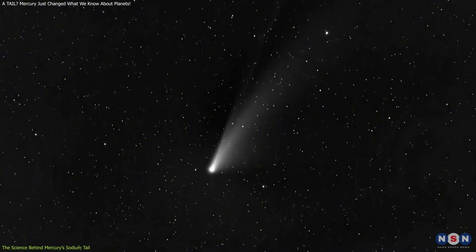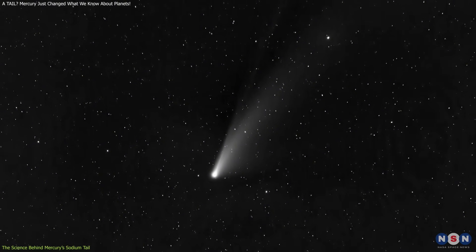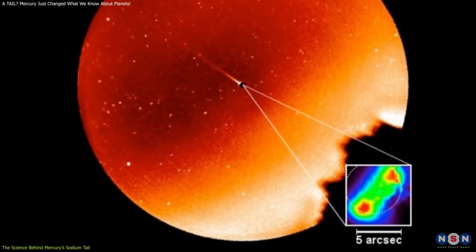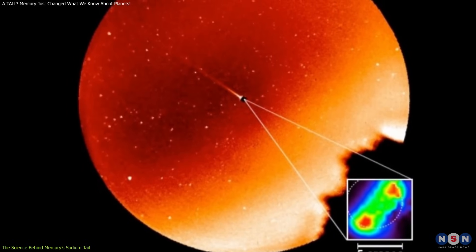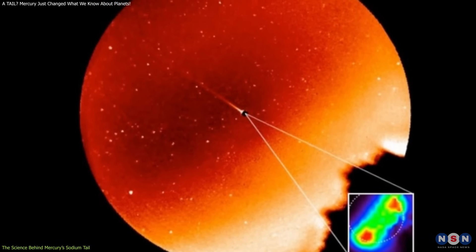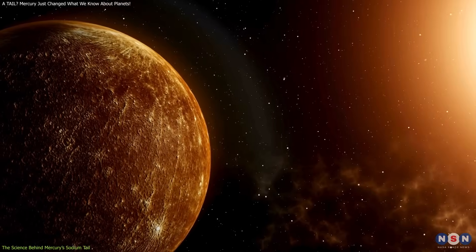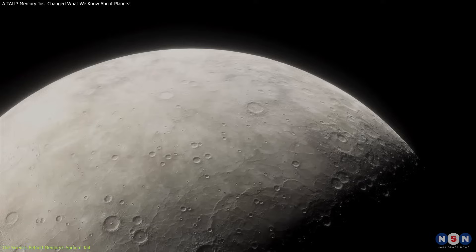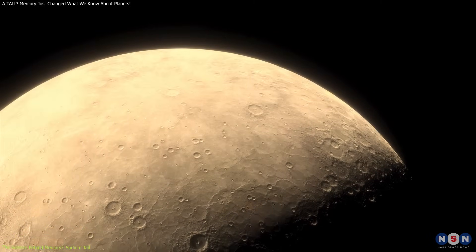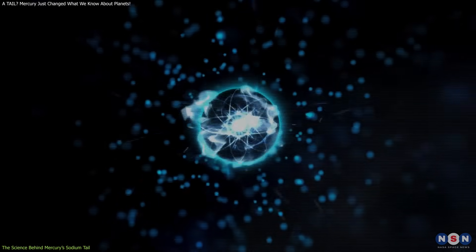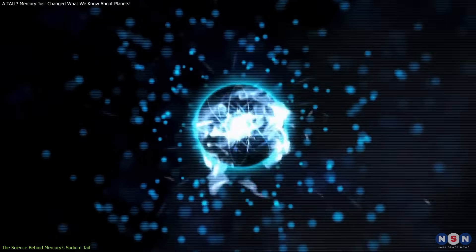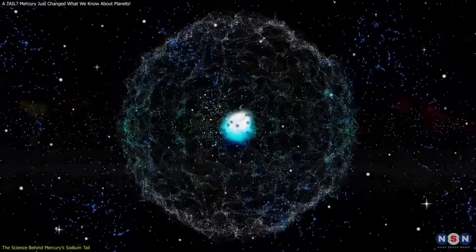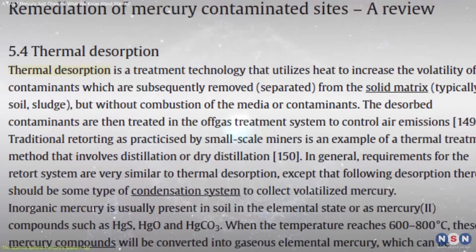The sodium atoms forming this tail aren't coming from deep within the planet. They're being ejected from its surface into space by natural forces, including solar radiation, intense surface heating, and high-speed micrometeoroids hitting Mercury's crust. Imagine a world so close to the Sun that its dayside reaches temperatures above 400 degrees Celsius. These extreme conditions cause atoms on the surface to gain enough energy to break free and float off into space, a process known as thermal desorption.